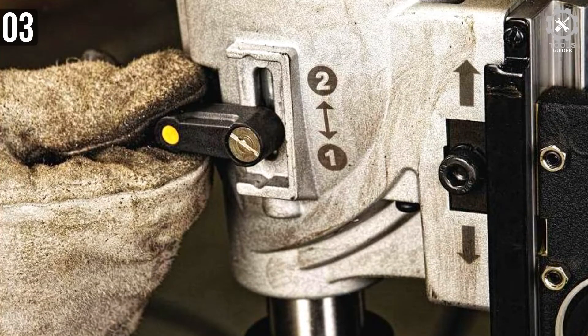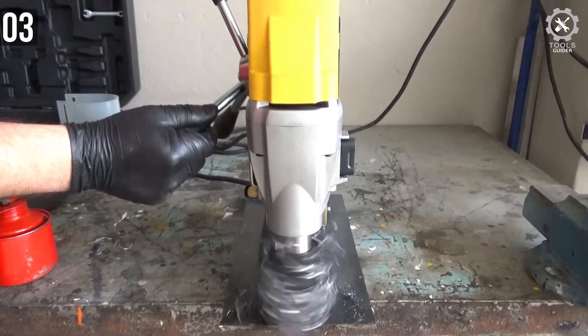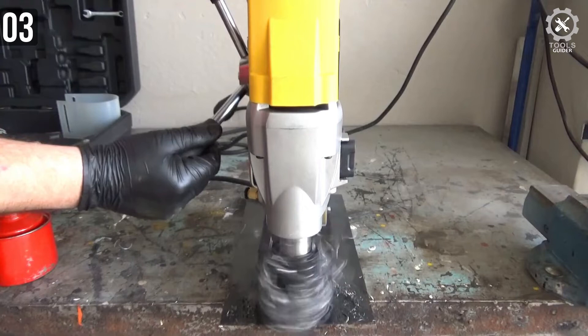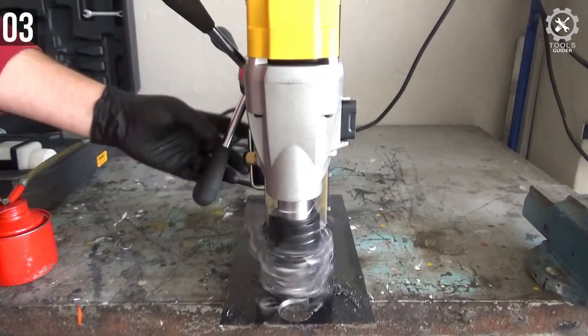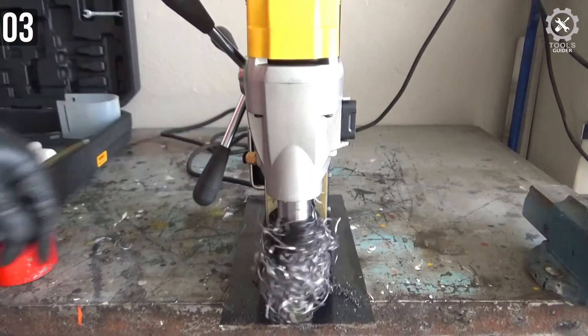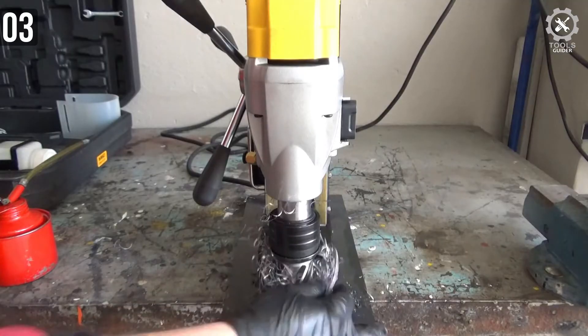The Dewalt DWE1622K is equipped with heavy duty construction and a powerful motor, thus being capable of effortlessly completing a wide array of drilling tasks. One doesn't have to be an expert to know how to use this machine. Operating it is straightforward and can be done even by complete DIY beginners.